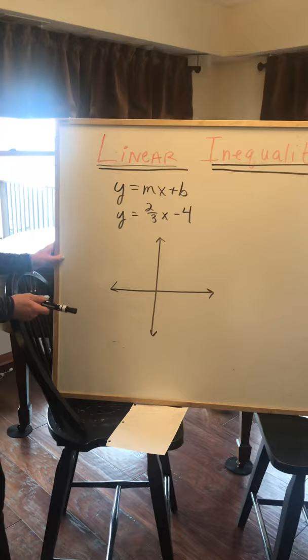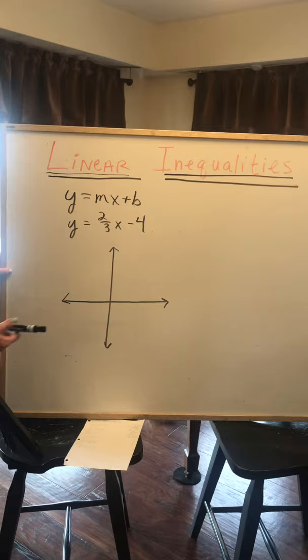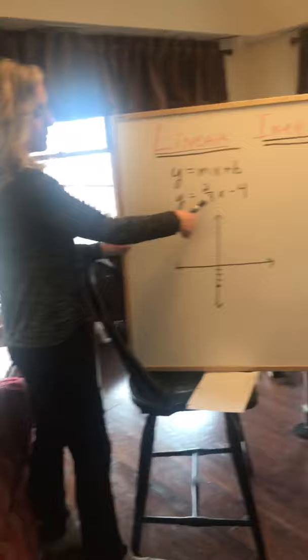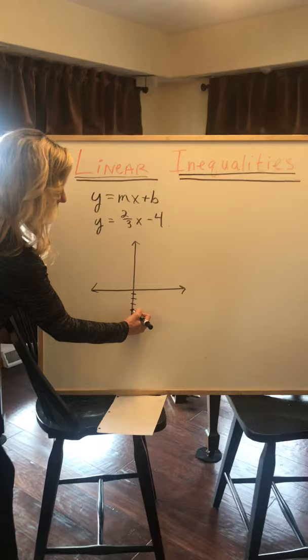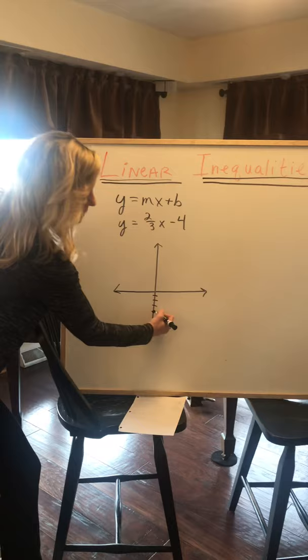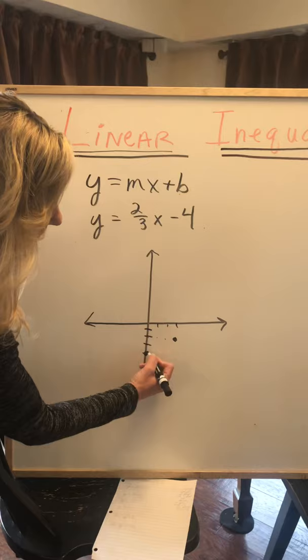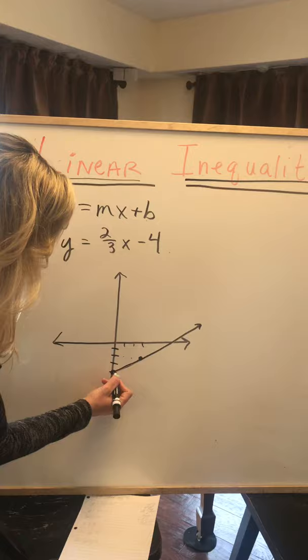So to graph from slope-intercept form, we first plot the y-intercept. In this case, our b is negative 4. So we're going down 4 on the y-axis and we plot that point. Then we look for our slope, which is our m. In this case, it's two-thirds. So we put our pencil there on the y-intercept and we do our rise over run. From here we're going to rise up 2, that's our top number, 1, 2, and we run over 3: 1, 2, 3. Plot our point. Then you connect the dots and extend the line. So that's what we already know.